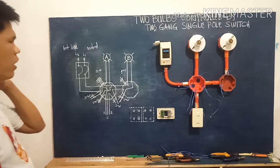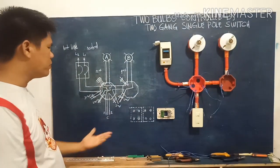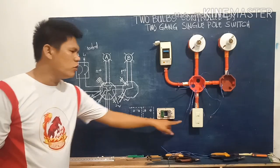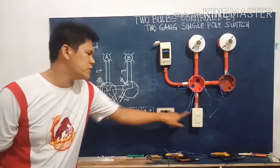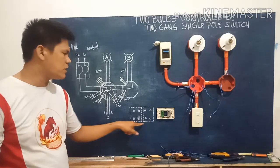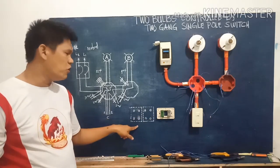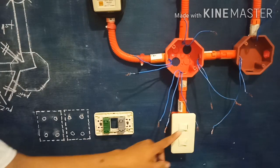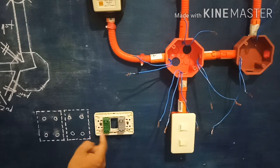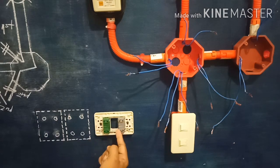Let's move on to our actual wiring connections. But before that, we will discuss how to wire the two-gang single-pole switch. At the back of this two-gang switch is the connection area. At the back portion of the two-gang single-pole switch it looks like this — we have four holes on one side and four holes on the other side as well.